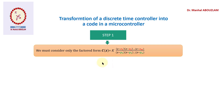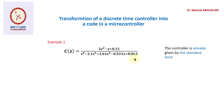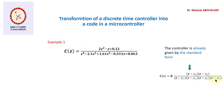We will distinguish between two cases. The first case is that the controller is already given in standard form, so we have to switch to the factored form. To show how to do that, we propose some numerical examples. We take an example where we have the standard form and have to switch to the factored form. We have a numerator of degree two giving a product of two polynomials of degree one, and a denominator of degree four giving a product of four polynomials of degree one. Now we have to find the value of the gain k.